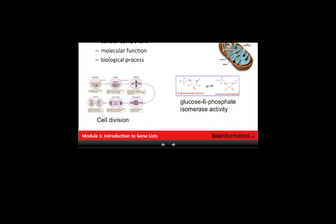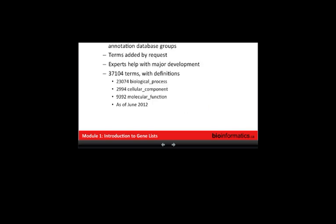Gene ontology covers cellular component — where in the cell things are expressed — molecular function, such as enzymatic function, and biological process, which is really pathways in general. There are two parts: the terms and the annotations. Terms are added by editors — professional people who spend most of their time curating gene ontology — and people can also add terms by request. There are over 30,000 terms: about 23,000 biological process terms, only about 3,000 cellular locations, and around 9,400 molecular functions.